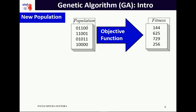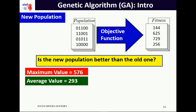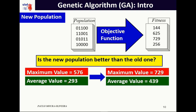Now we have the new population. We evaluate it and check whether it improved relative to the old population. The maximum value in the old population was 576 and the average was 293. In the new population the maximum value is higher at 729, and the average value is also higher at 439. It improves both in the maximum and average value — this is a feature of the GA, which intends to improve the average value from generation to generation.